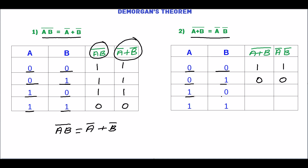For A=1, B=0: A plus B is 1, and 1 complement is 0. A complement is 0, B complement is 1, and 0 into 1 equals 0. For A=1, B=1: A plus B is 1, and 1 complement is 0. A complement is 0, B complement is 0, and 0 into 0 is 0.